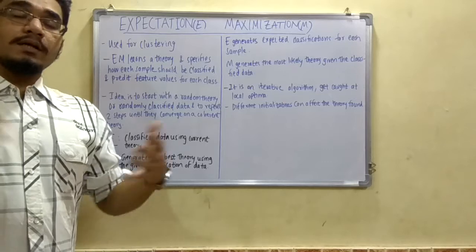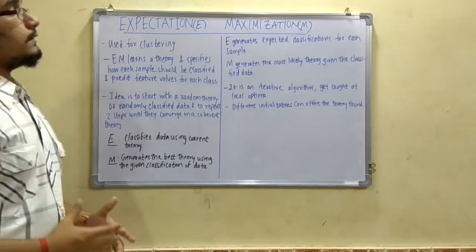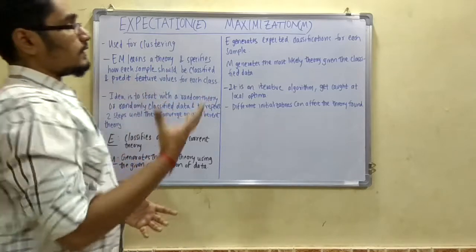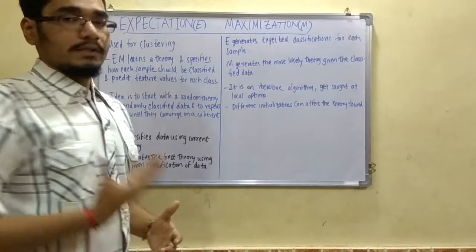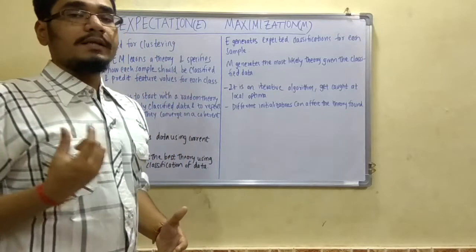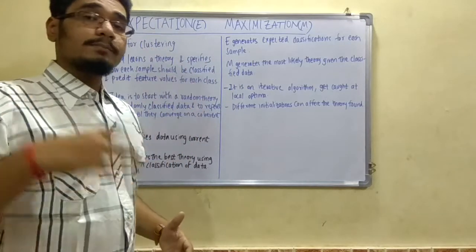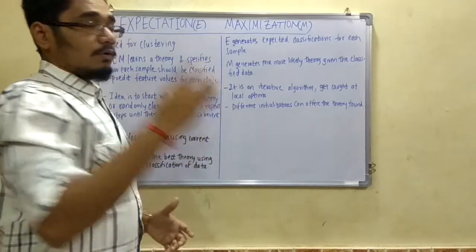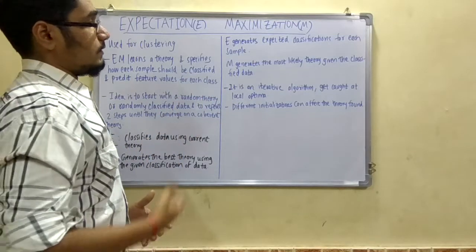In more generalized terms, E generates the expected classification for each sample - for each individual sample in the training set it will generate the expected classifications. First we do the classification, then we do the categorization, that is the clustering.